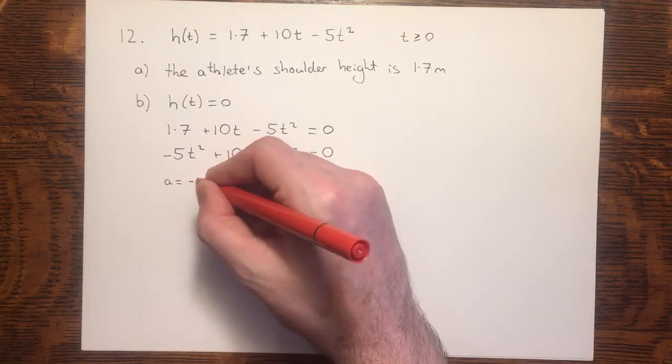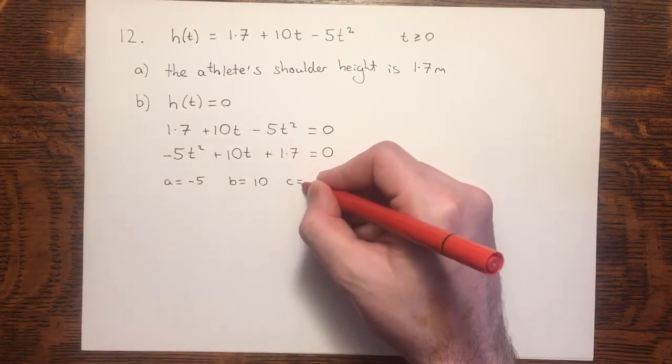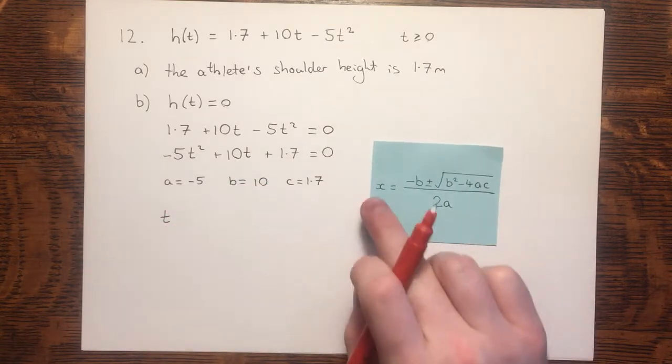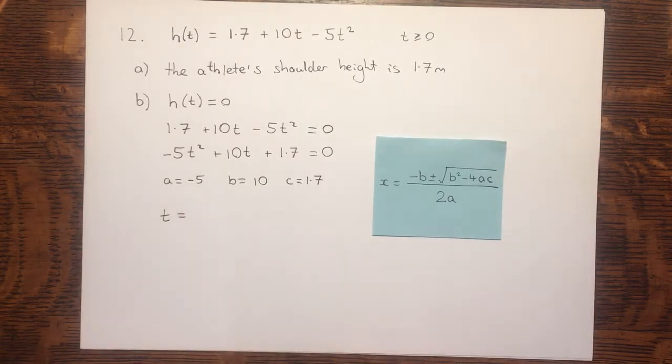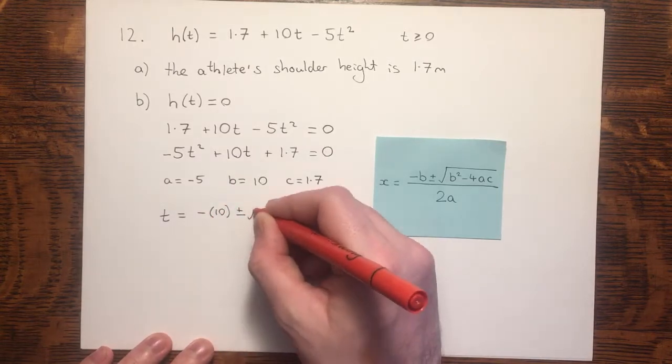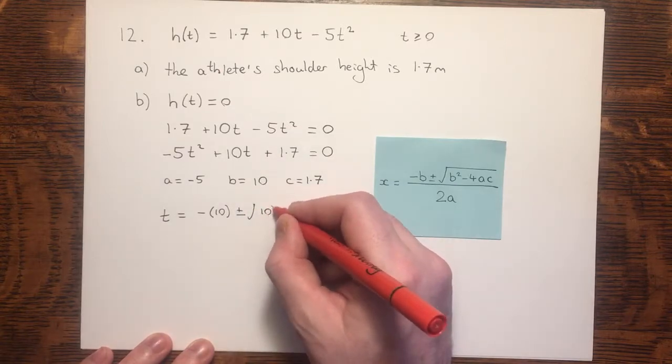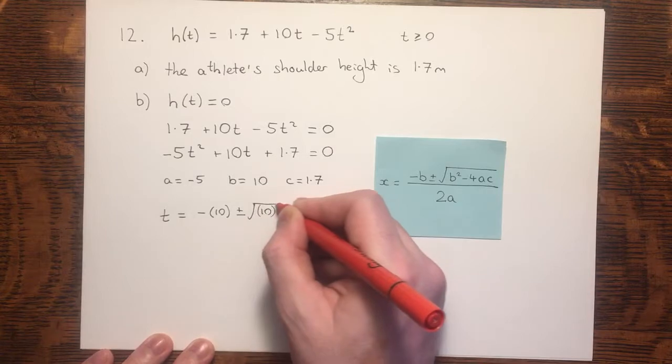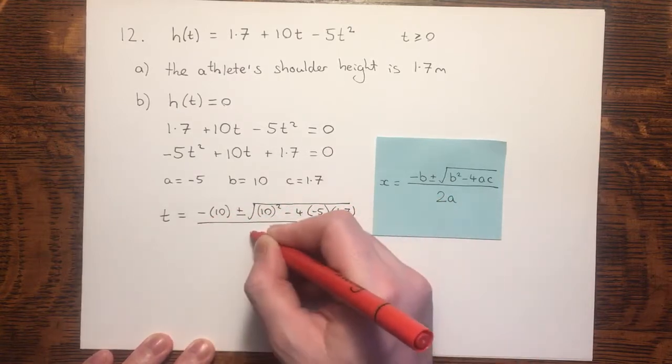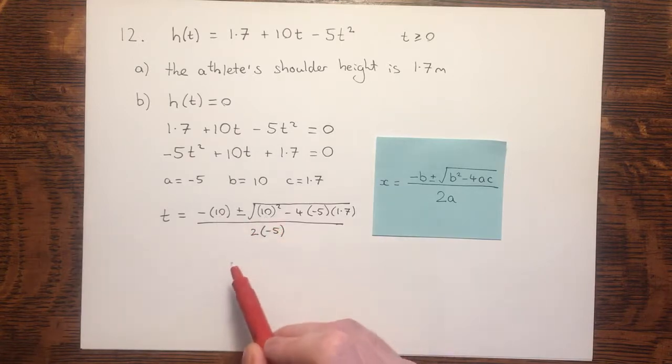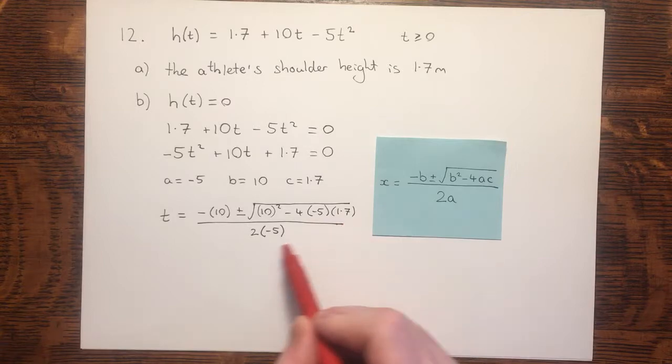A equals minus 5, B equals 10, and C equals 1.7. The quadratic formula, normally given in terms of x, but in this case, we're finding T, would be minus B, plus or minus the square root of B squared minus 4 times A times C. And all of that's divided by 2 times A. Now, I've used brackets for my substitution to avoid any sign errors. Let's just check my substitution. B is 10 and 10, A is minus 5, and C is 1.7, and A is minus 5. I'm now going to use this in the calculator.